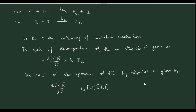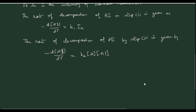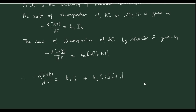We can write the overall rate of decomposition of HI by combining these two steps. Therefore, −d[HI]/dt = K1 × Ia (by the first step) + K2 × [H] × [HI] (by the second step). This is the rate law for decomposition of HI, given as equation 1.